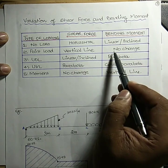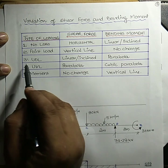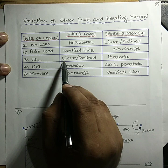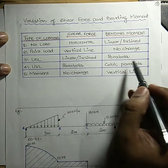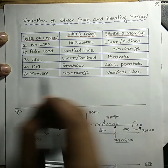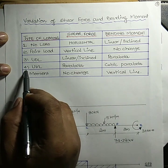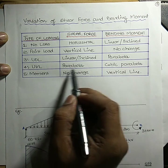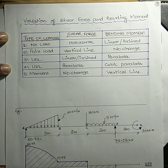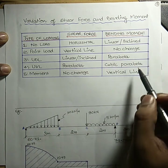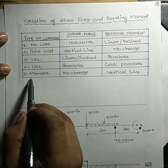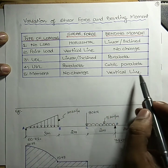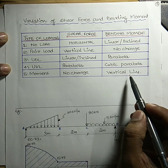If the loading is UDL, shear force will be a linear inclined line whereas bending moment is a parabola. If the loading is UVL, shear force variation will be a parabola and bending moment will be a cubic parabola. For a moment, there will be no change in shear force, whereas in the bending moment you will see a vertical line.